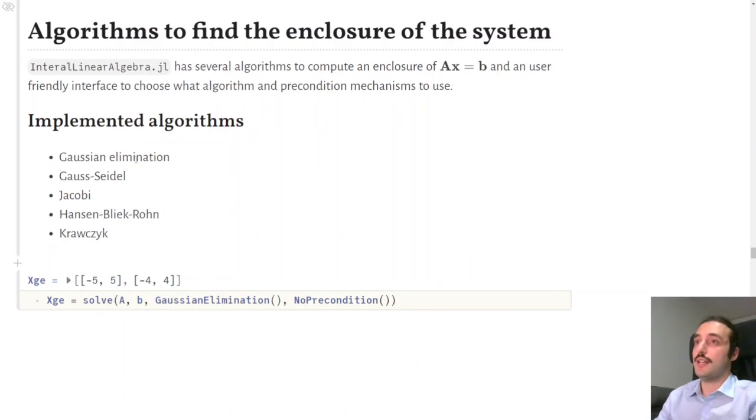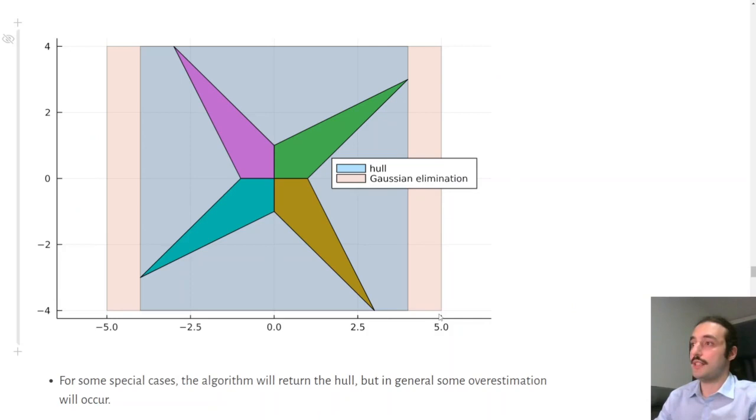So, what we can do if we have big matrices is to use some polynomial time algorithms, and here we have a list of the algorithms implemented in the package, which will give an enclosure, which may however be strictly larger than the hull. So, here, for example, we solve our 2D problem using Gaussian elimination, and when we plot the result, we see that we get an enclosure, but this enclosure is larger than the hull. And that's something that happens in general. There are special cases when we can get the hull, but in general, we will have some overestimation.